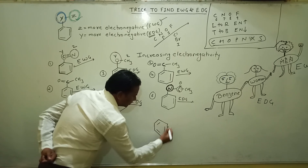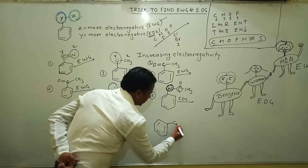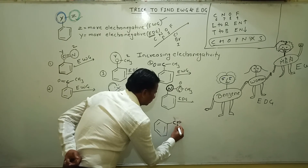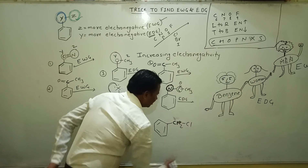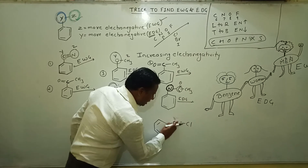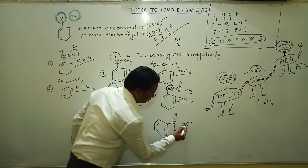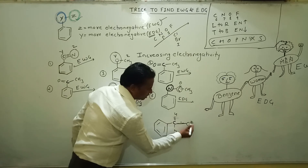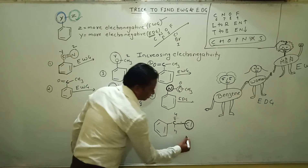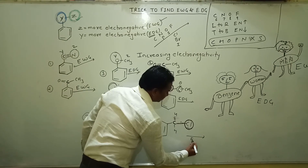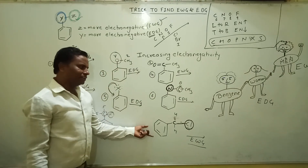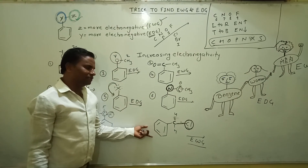Let's take another example: a group with C=C-CH₂Cl attached to the ring. Here Y is carbon and Z has chlorine attached. Chlorine is more electronegative than carbon, so Z is more electronegative — therefore this is an electron withdrawing group that deactivates the benzene ring.